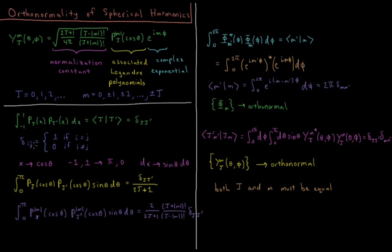Now let's do a substitution: x to cosine theta. That takes our limits of integration from minus 1 to 1, to 0 to pi, and it takes our volume element from dx to sine theta d theta. So the integral from 0 to pi of P_j of cos theta times P_j' of cos theta sine theta d theta equals the Kronecker delta over 2j plus 1. So they're still orthogonal, but this 2j plus 1 shows up in the normalization constant.